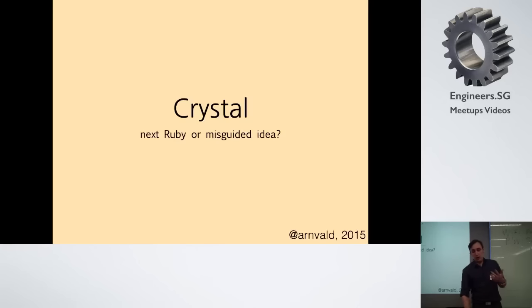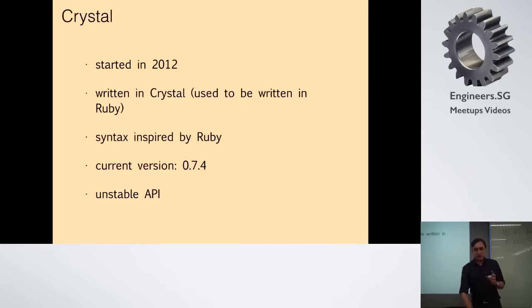In this talk, I will try to tell you about the language and answer the question if Crystal, the language heavily influenced by Ruby, can be the next Ruby or is it a totally misguided idea. Just a brief information: the project started in 2012, but it's still unstable. The current version is 0.7.4, so it's just three years old and hasn't gained a lot of popularity yet.